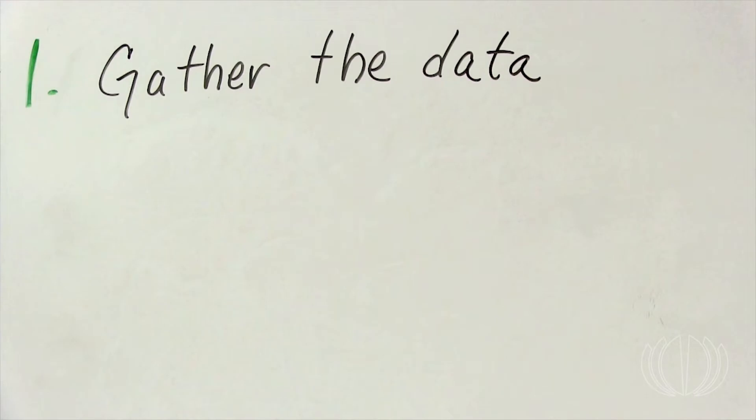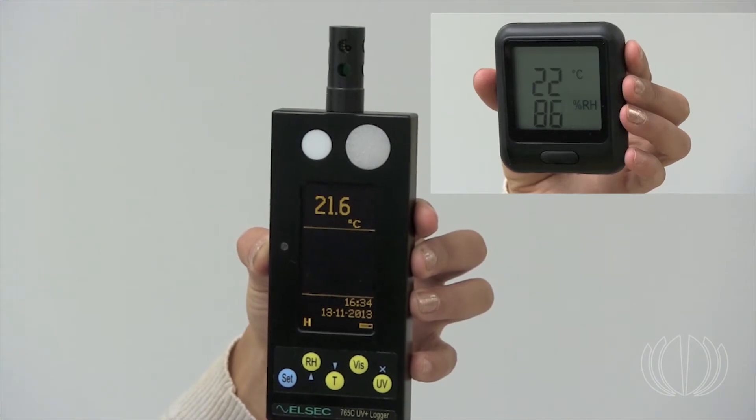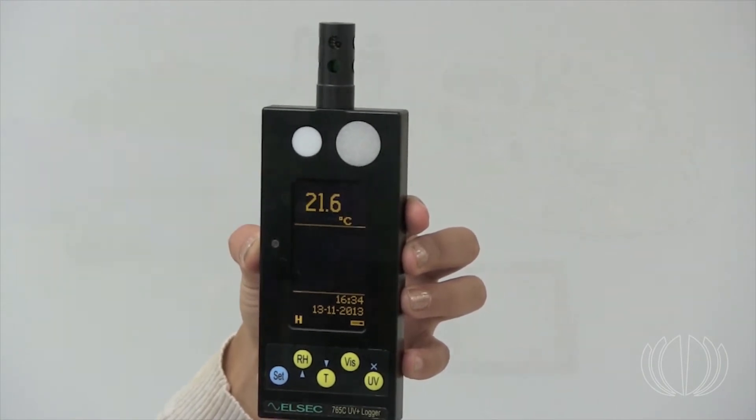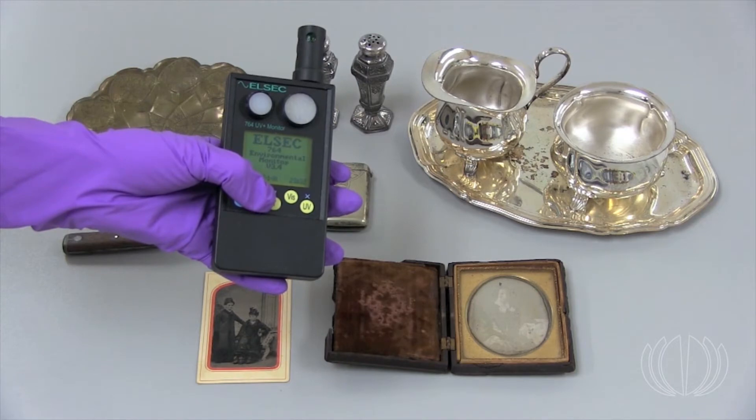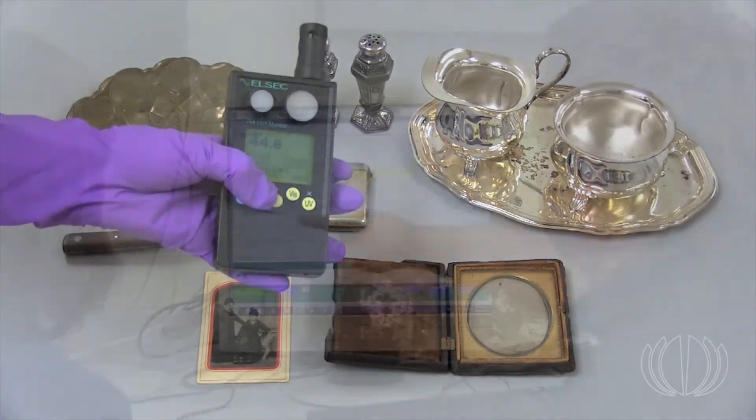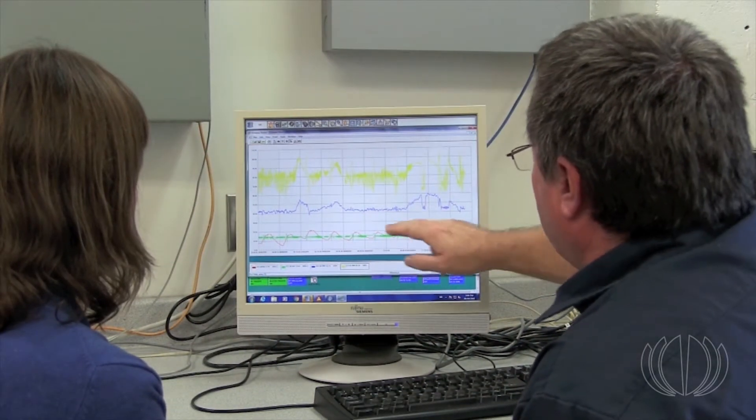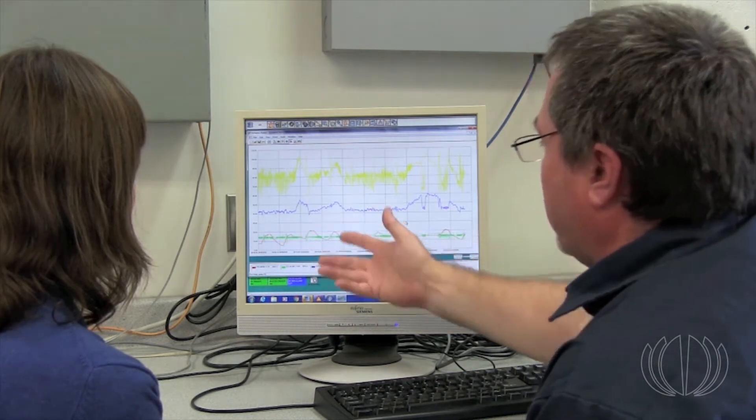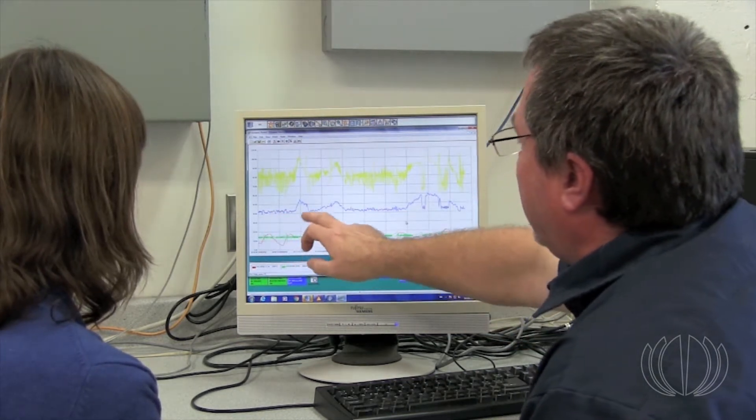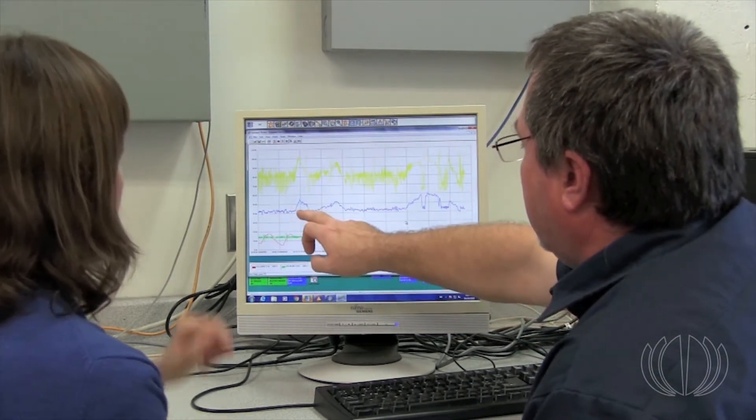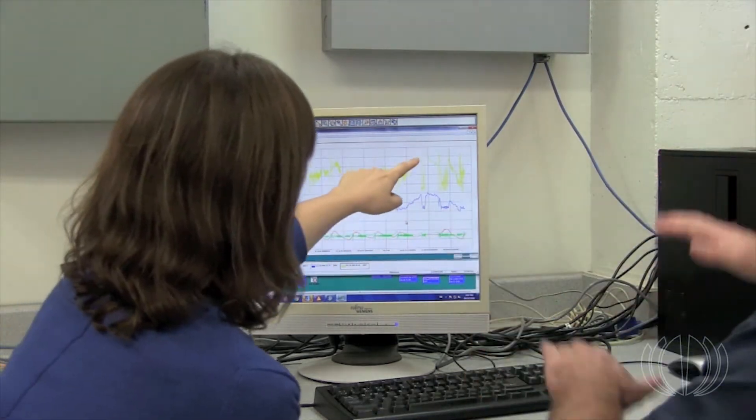To understand your collection's environment, a combination of spot reading and recording devices can be used. Spot reading devices allow you to take a quick reading of current conditions. Recording devices automatically record many readings and can capture rapid changes that may last only a few minutes, as well as long-term trends over many months.